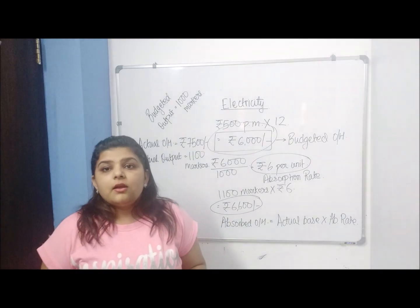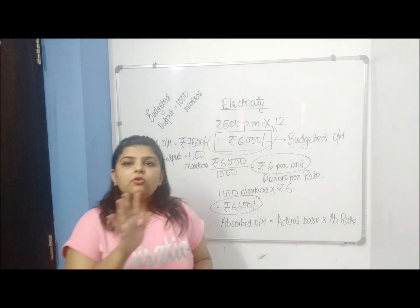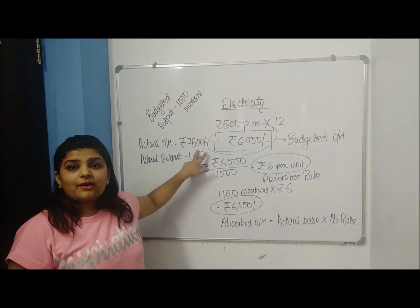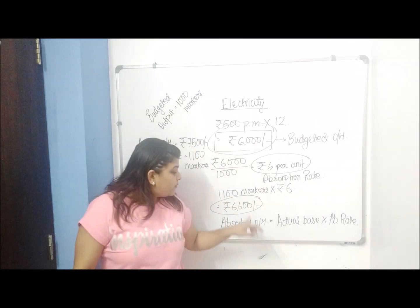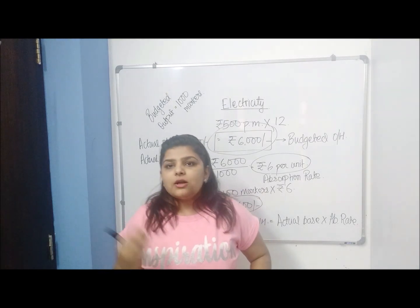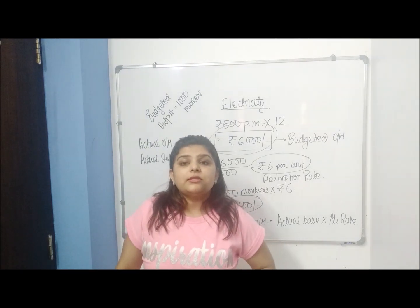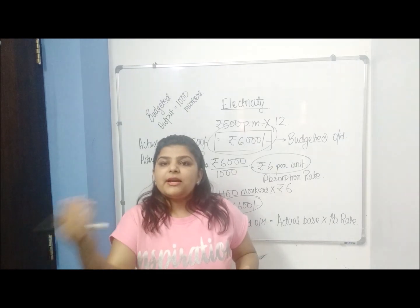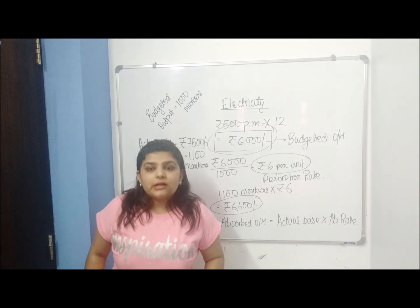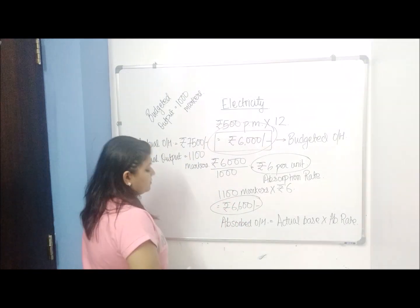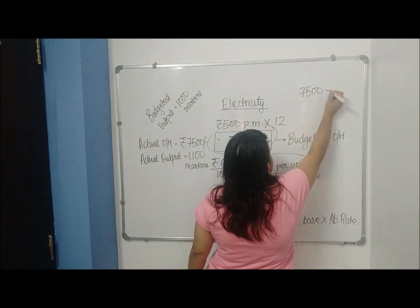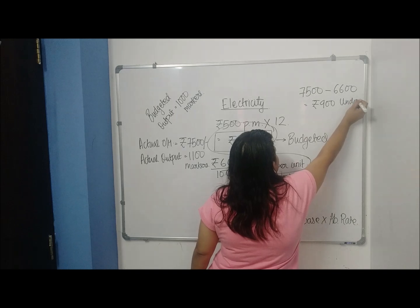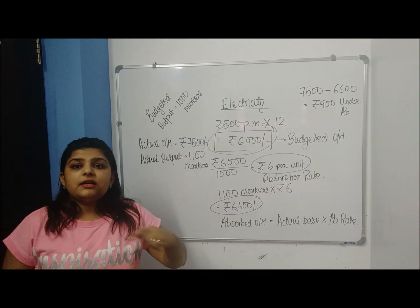With this we can connect one more topic: under or over absorption. It is very simple. How much went out of my pocket? Actual overheads — rupees 7500. What came back to my pocket? Rupees 6600. Gone 7500, coming back 6600 — obviously I absorbed less. So I have an under absorption of 7500 minus 6600, which is equal to rupees 900 under absorbed.